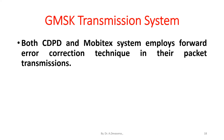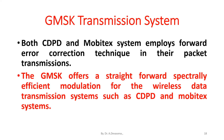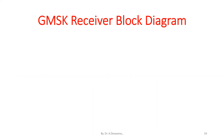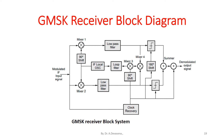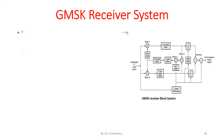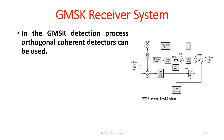The Mobitex system has better Inter-Symbol Interference (ISI) tolerance. Both CDPD and Mobitex systems employ forward error correction technique in their packet transmissions. GMSK offers straightforward, spectrally efficient modulation for wireless data transmission systems such as CDPD and Mobitex. The GMSK receiver block diagram is shown here, where the modulated IF input signal is processed to obtain the demodulated output signal.